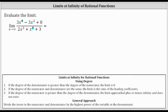Notice the degree of the denominator is greater than the degree of the numerator, which falls under case one: if the degree of the denominator is greater than the degree of the numerator, the limit is zero. So the limit of the rational function as x approaches infinity is equal to zero. The reason it's zero is because the higher power of x is in the denominator, which indicates the denominator is growing faster than the numerator and the values approach zero.